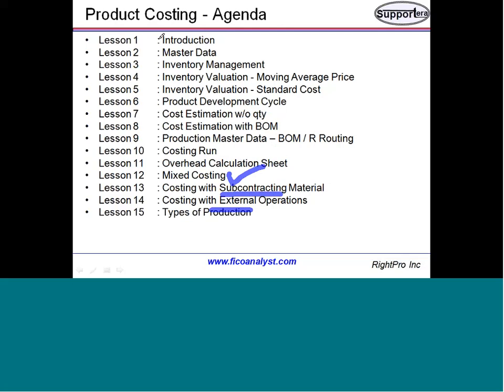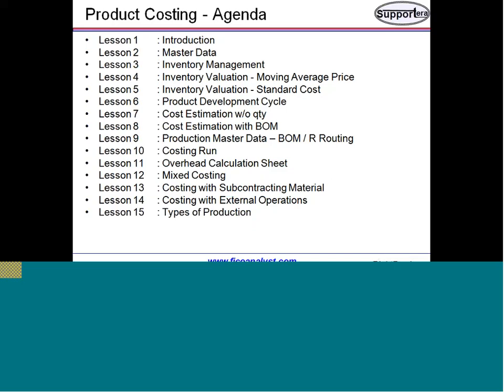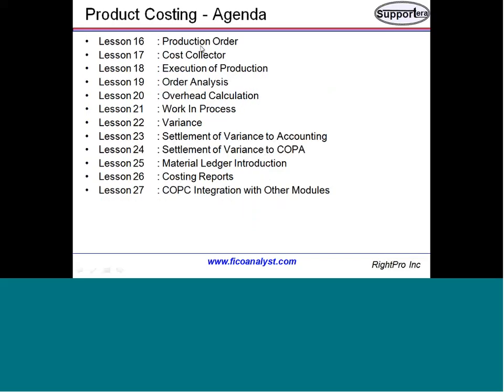All of this forms the base and covers different types of standard cost estimation. Then we move into actual production — different types of production scenarios. We will look at production orders and cost collectors, covering discrete manufacturing, repetitive manufacturing, and process industries, including job order costing as one type of manufacturing.